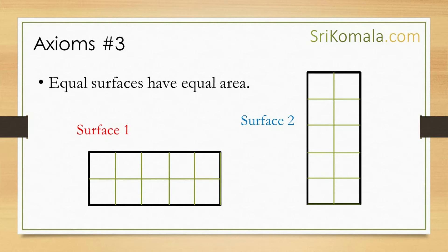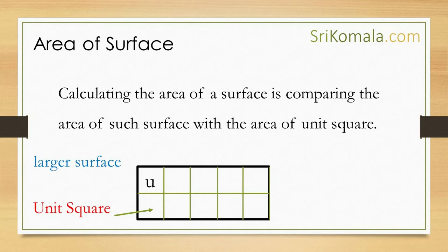Axiom number 3: equal surfaces have equal areas. As can be understood from the diagram, the 2 rectangles shown here are the same rectangle, despite the fact that the 2 rectangles face different directions. Thus, the 2 rectangles have the same area. As can be understood from the 3 axioms, calculating the area of a surface is actually comparing the area of such surface with the area of a unit square, as can be understood from the figure.